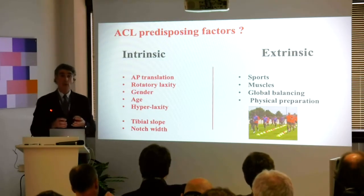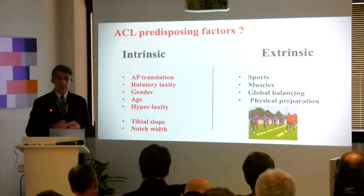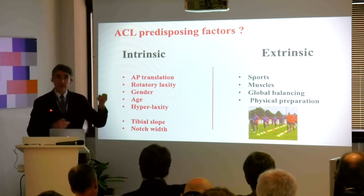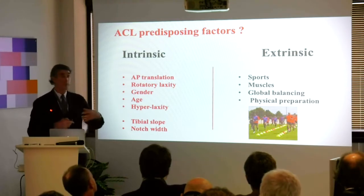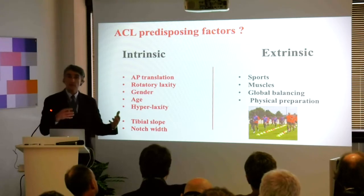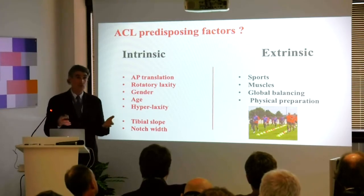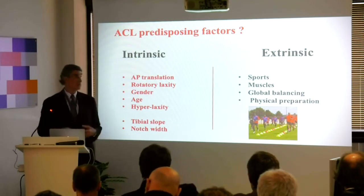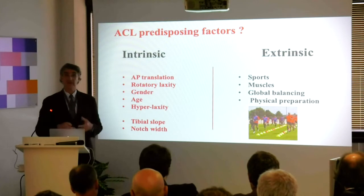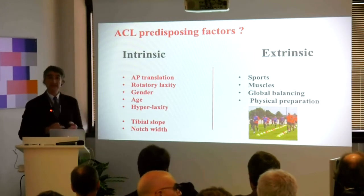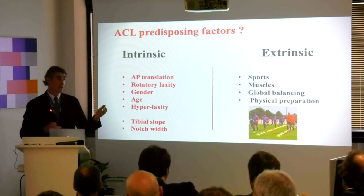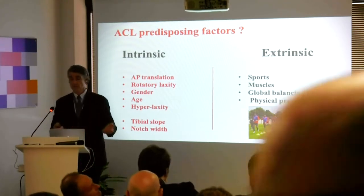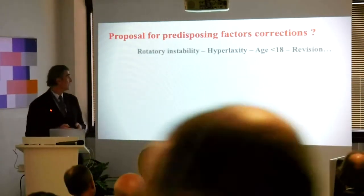One very strong point among intrinsic factors is definitely the tibial slope, and this is one of our focuses in Lyon. Extrinsic factors — I will not speak about that much, but it's also very important: sports, muscles, balancing, the global balancing of your body, pelvis, the back. Core muscles are fundamental, so you have to look at physical preparation. When you have very good physical preparation, somewhere you rupture your ACL less.